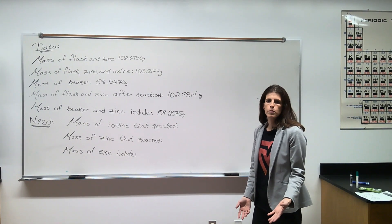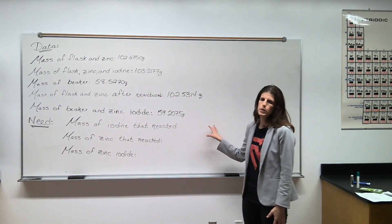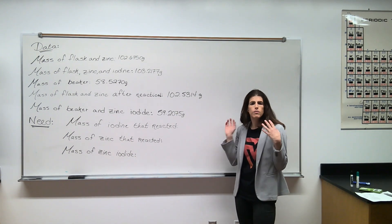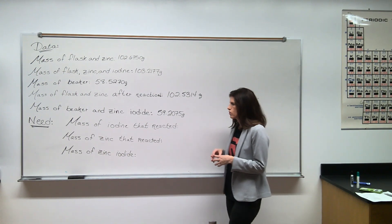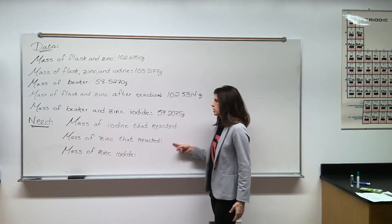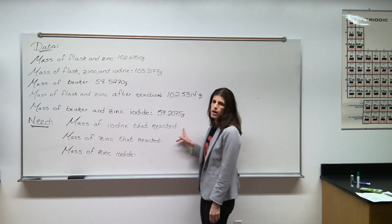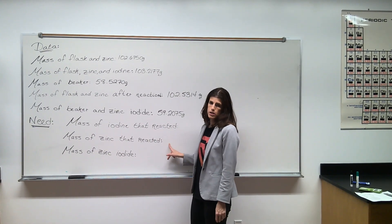Alright, now that we're done with our experiment, it's time to look at all the data we collected and figure out the empirical formula of zinc iodide. In order to do that, we need two pieces of information: the mass of iodine that reacted and the mass of zinc that reacted.